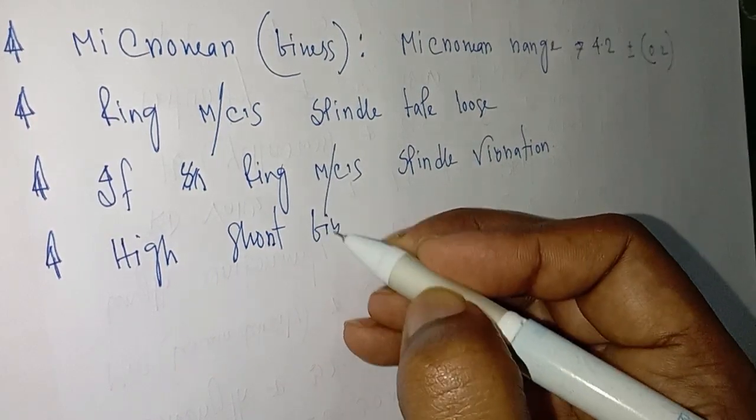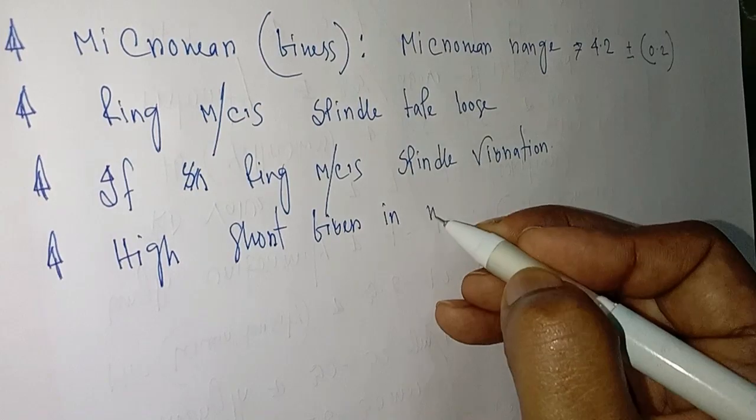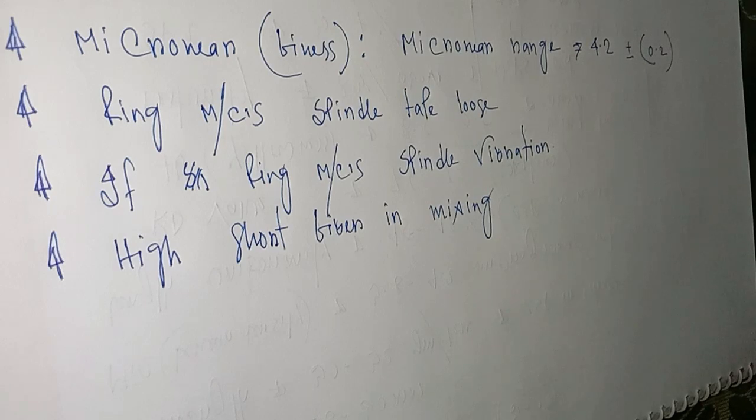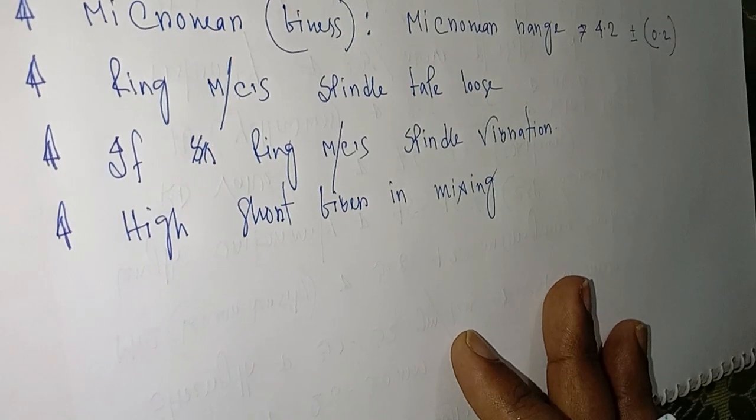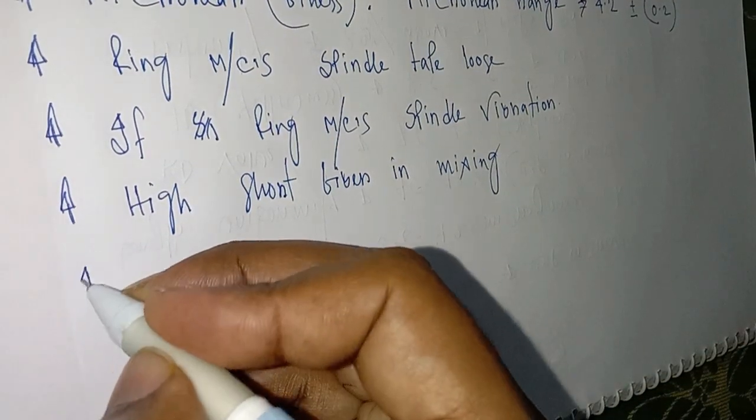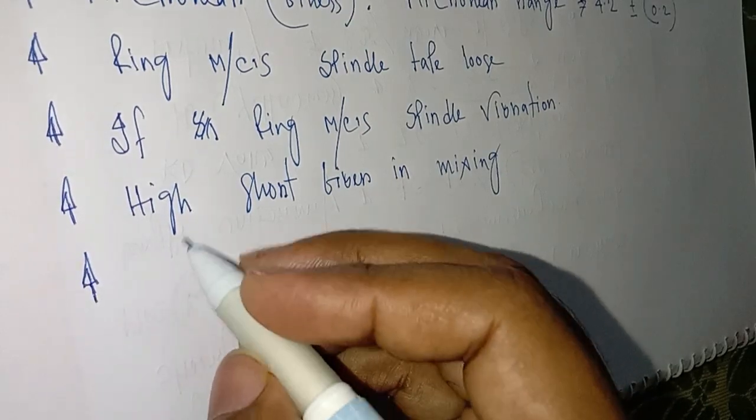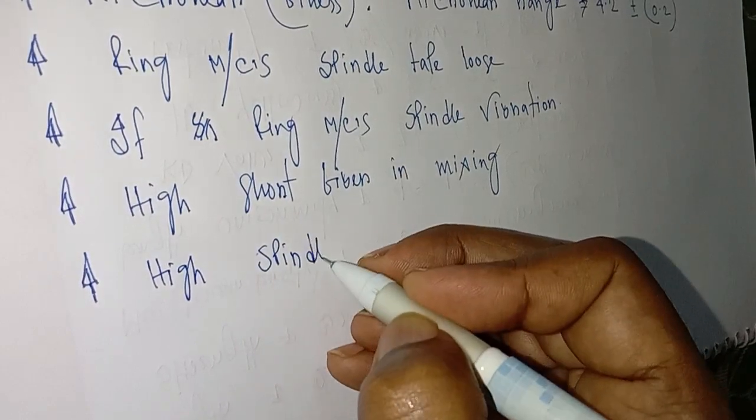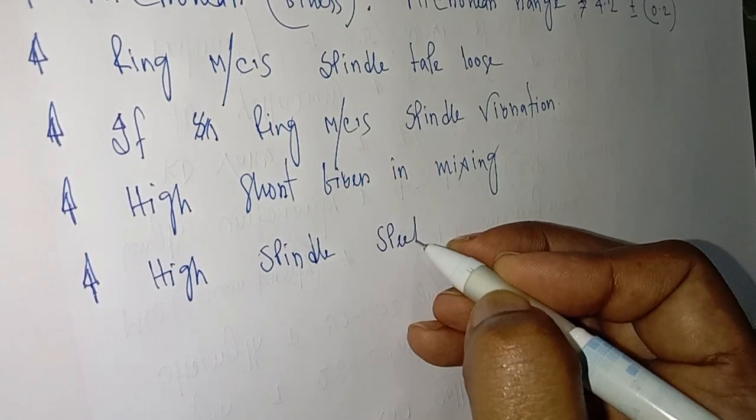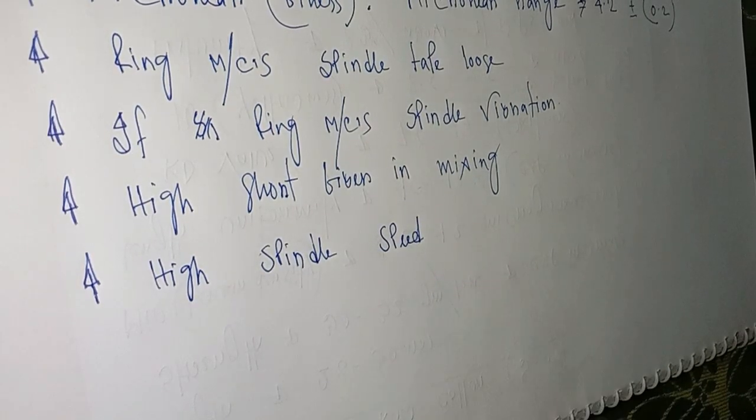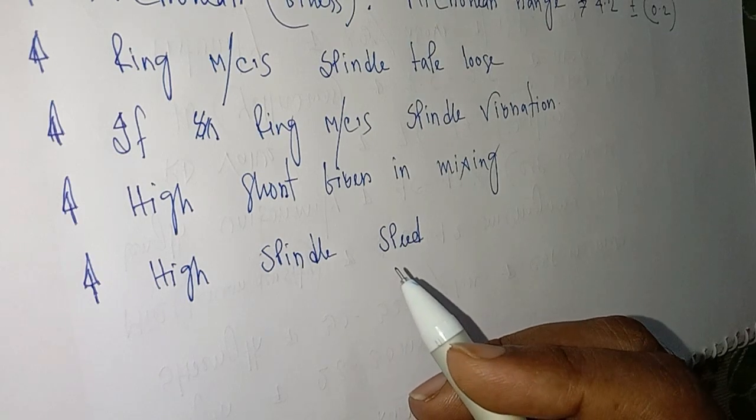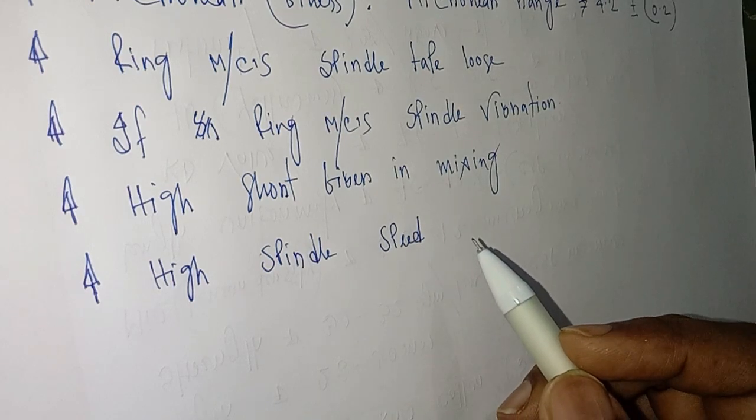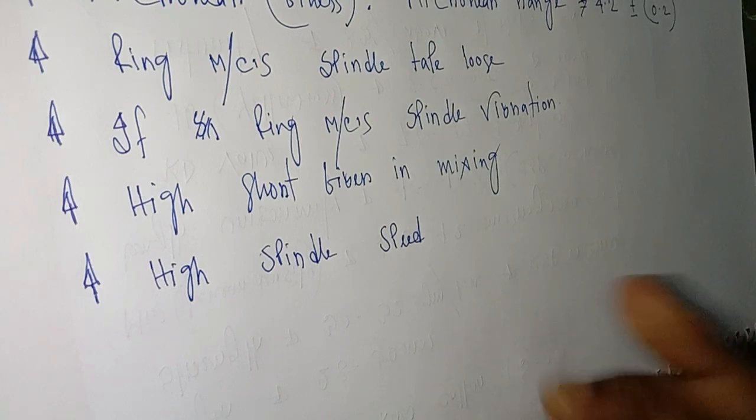High short fiber in mixing will increase yarn hairiness. Then high spindle speed - if the ring machine spindle speed is very high, it will also contribute to yarn hairiness.